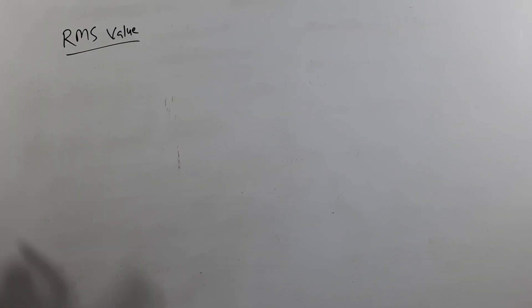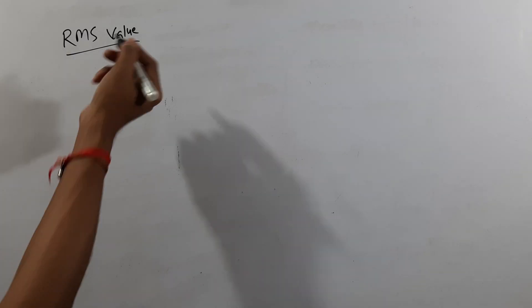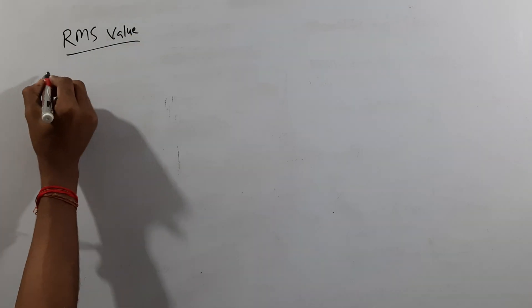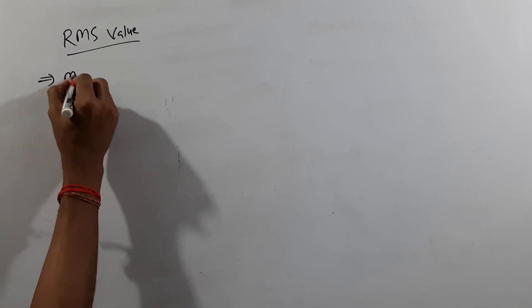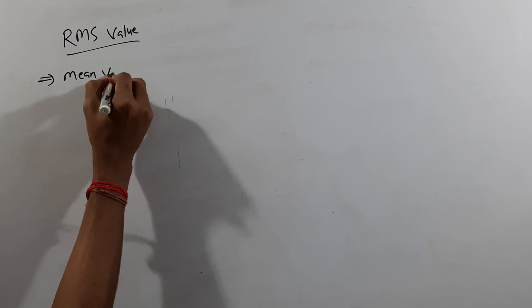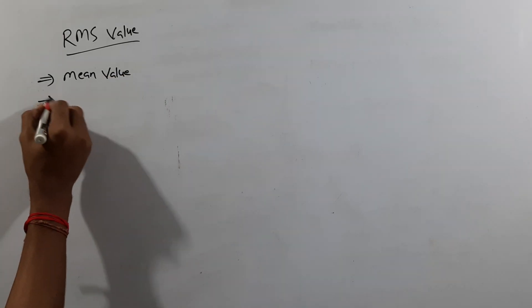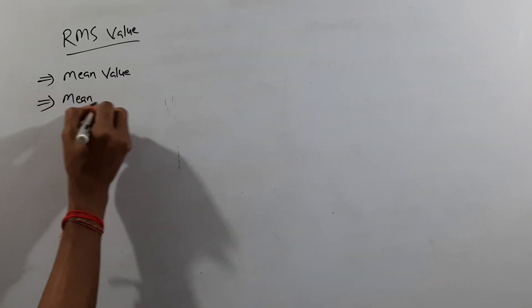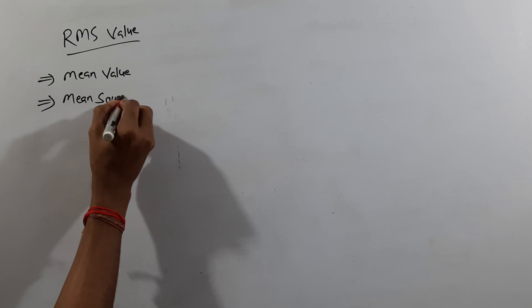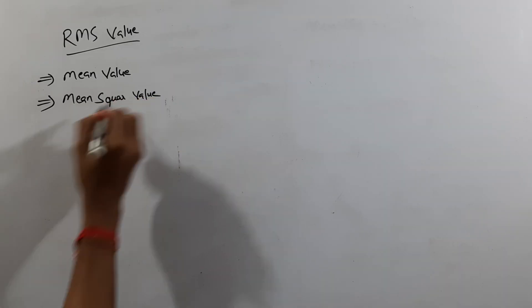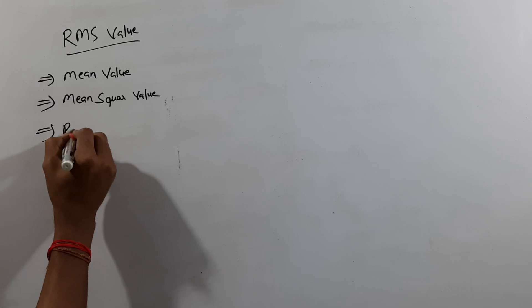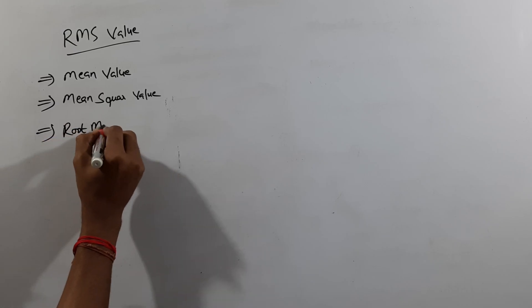We have a lot of problems with 3 marks and 5 marks in this chapter. We have RMS value, mean value, and mean square value. Next, we have root mean square value, which is the same as RMS.